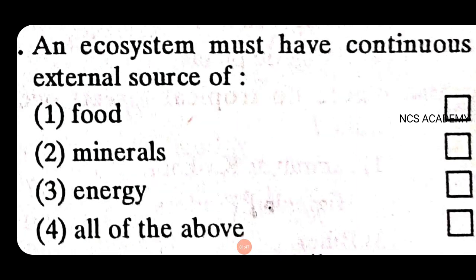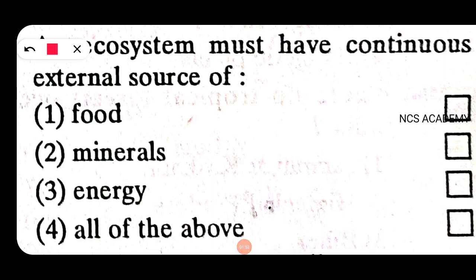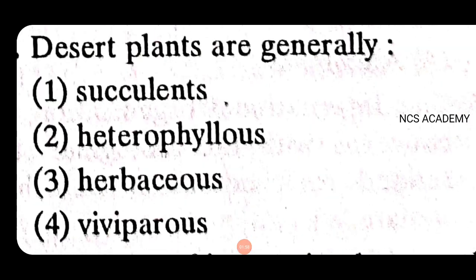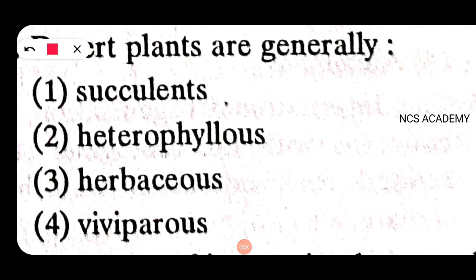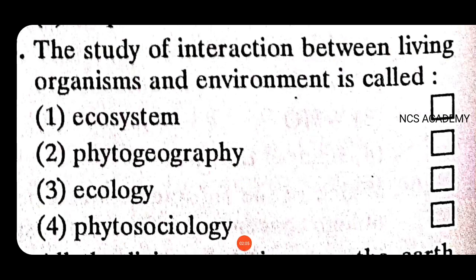An ecosystem must have a continuous external source of energy — energy is the right answer. Desert plants are generally succulent — the right answer is succulent. The study of interaction between living organisms and the environment is called ecology.